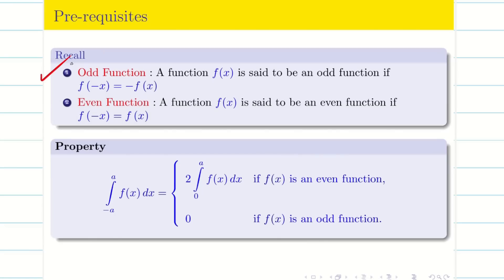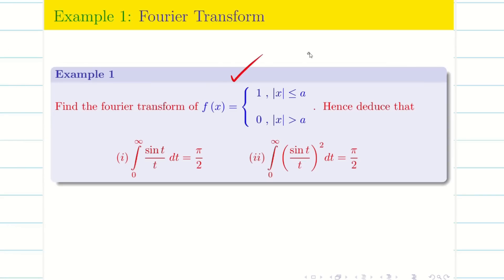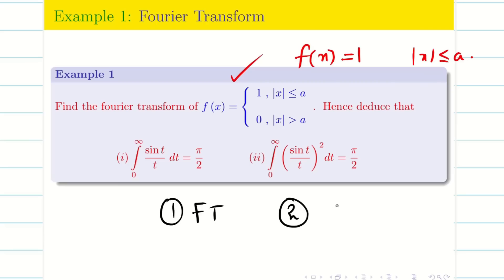We then covered the basic definition of odd and even functions and used the essential property: the integral from -a to a of f(x) dx. If it is an even function it equals 2 times the integral from 0 to a; if it is an odd function it equals 0. We solved a simple problem taking f(x) = 1 on the interval |x| ≤ a, dividing into steps: first the Fourier transform, then Parseval's identity or inverse Fourier transform depending on the deductions.